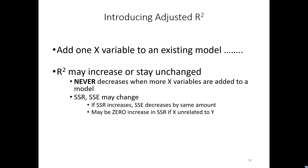However, there is a dark side to this particular goodness of fit measure. The problem is if you add a variable to the model, the R-squared will never go down — likely it'll go up.